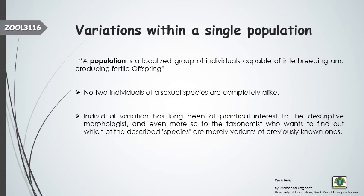These variations are very attractive to the morphologist — who studies the structure and parts of the organism — as well as to the taxonomist, who categorizes organisms into different categories. So these variations within the population are of great interest to these two types of scientists.